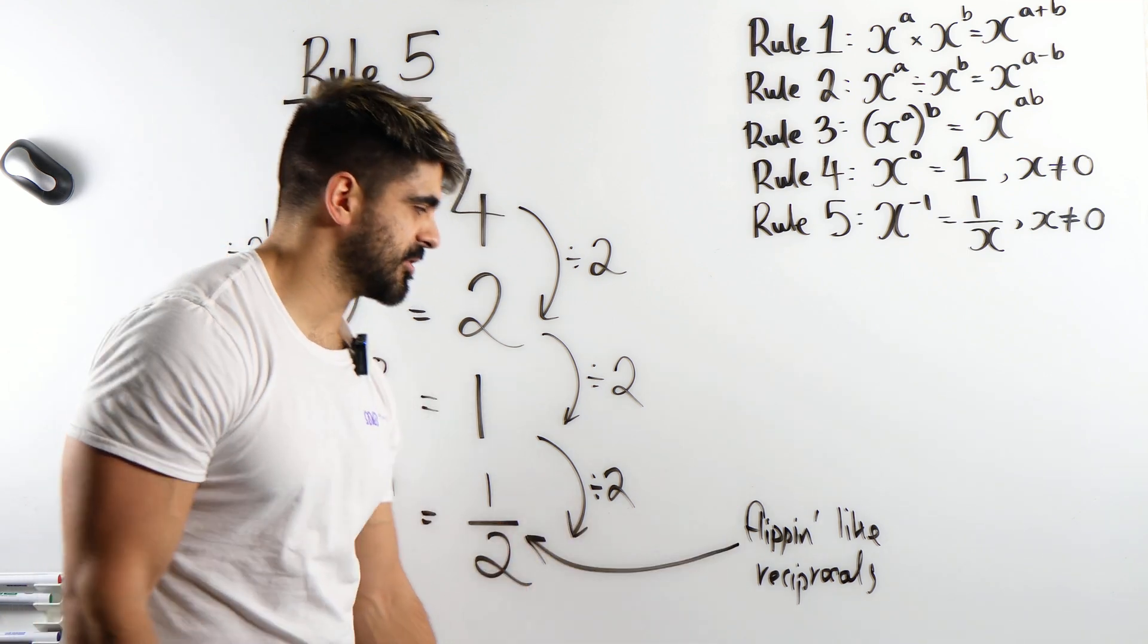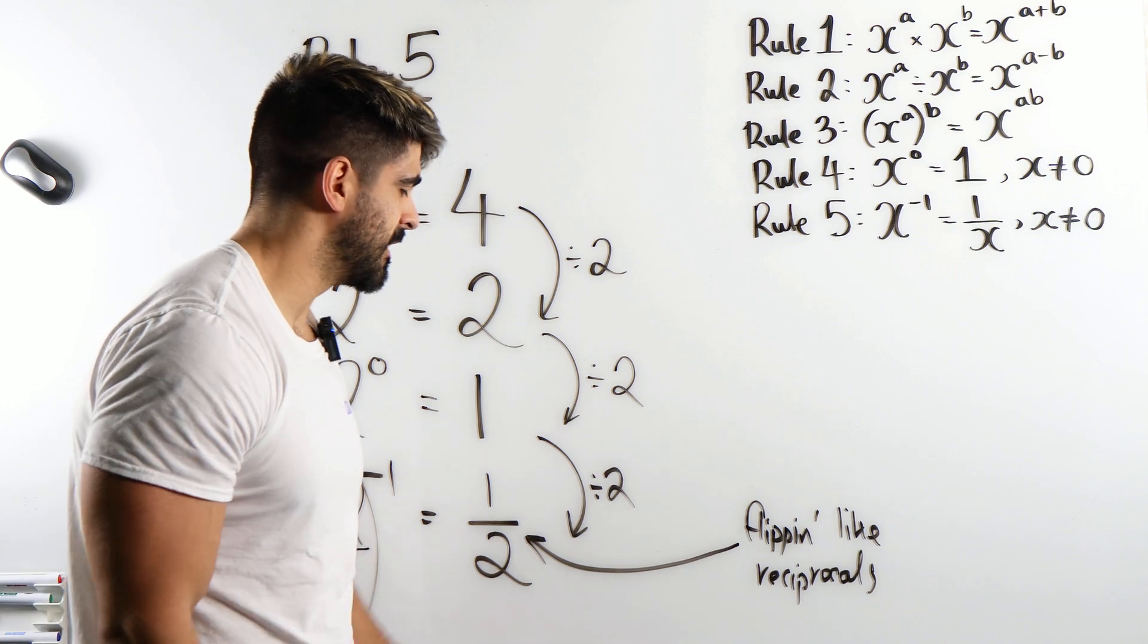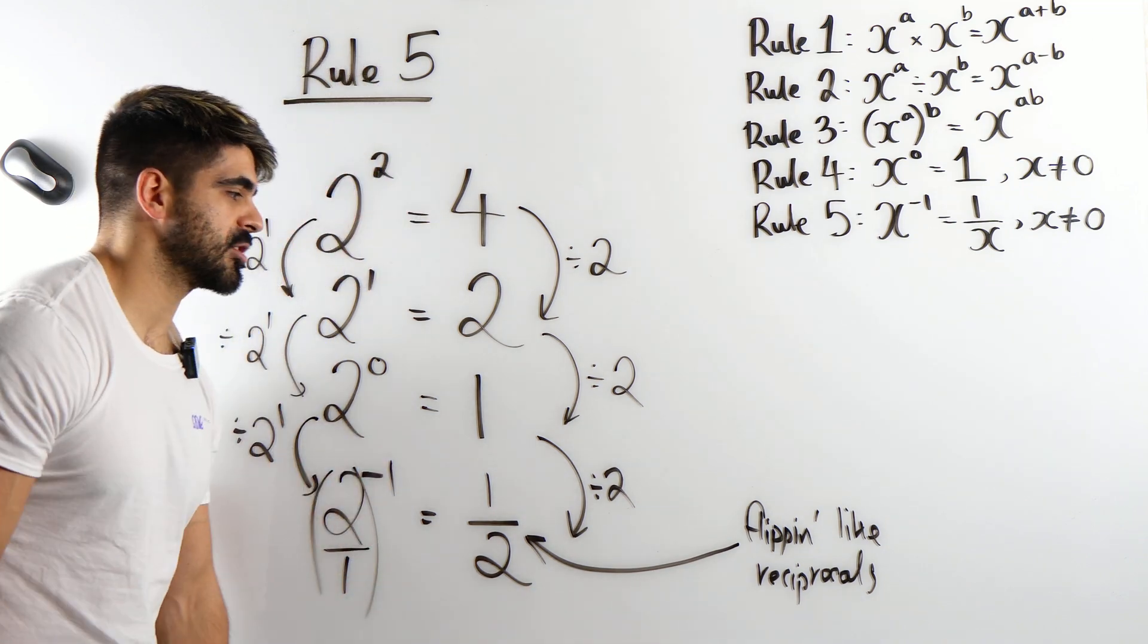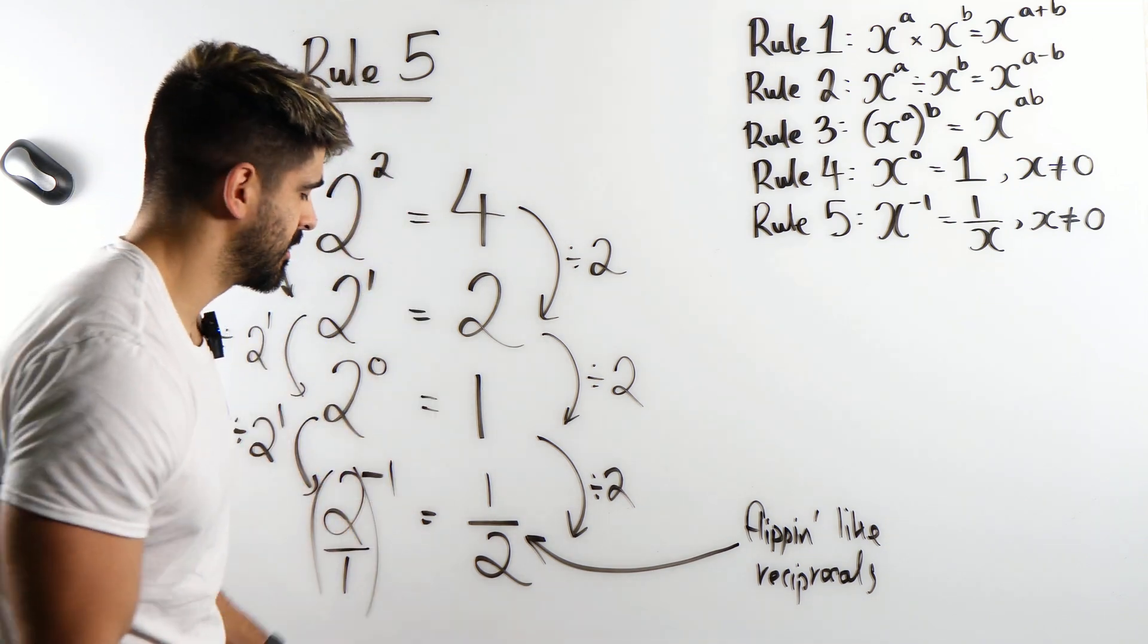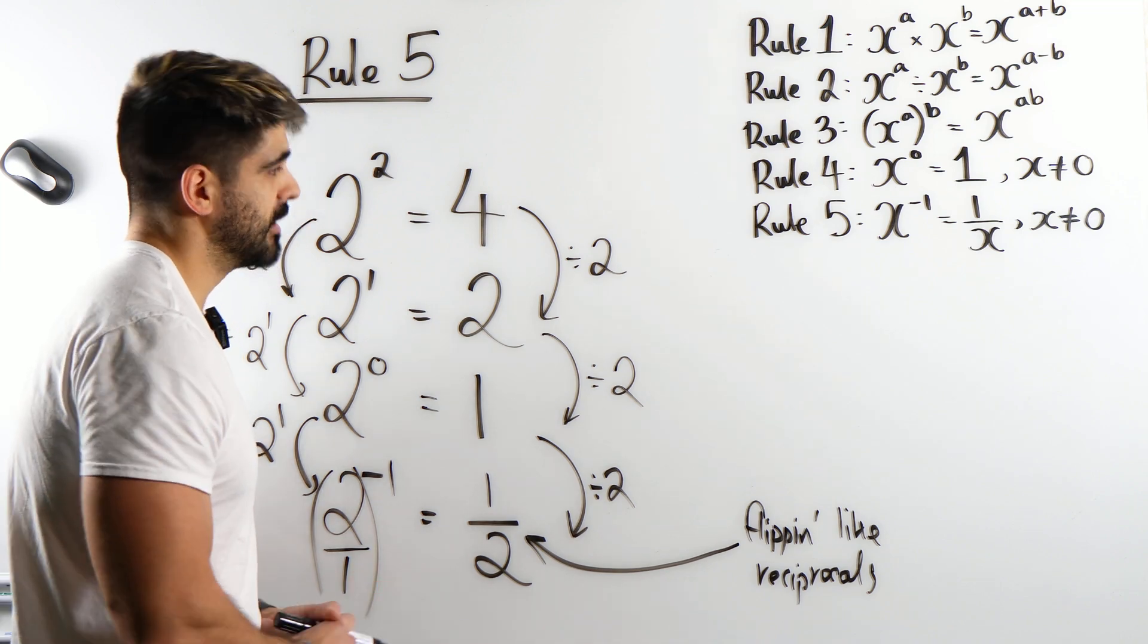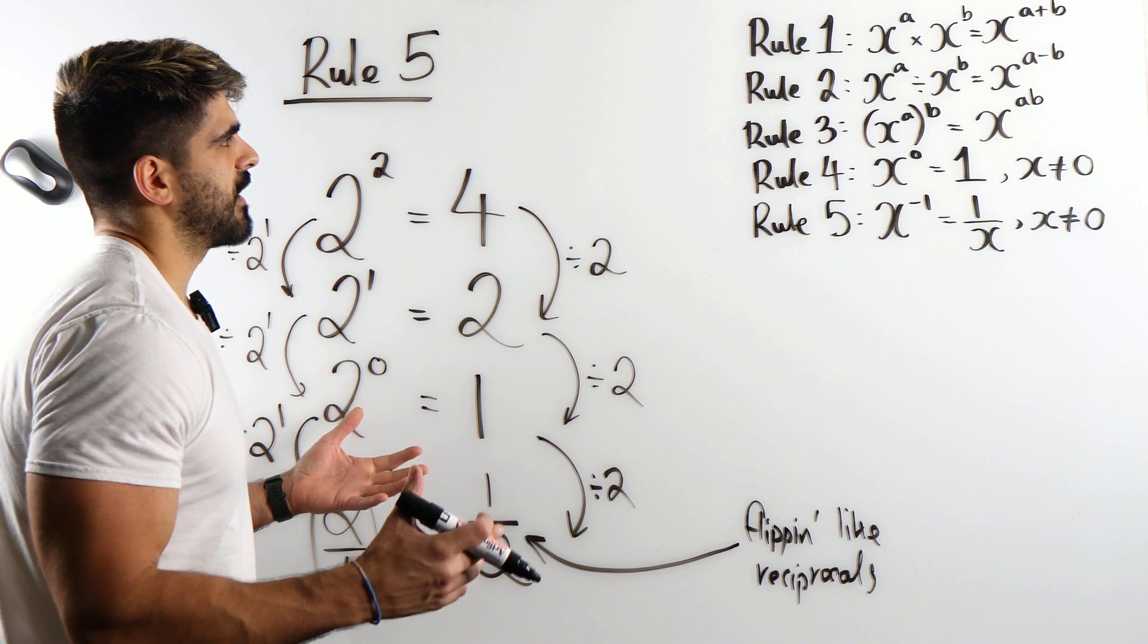I recommend you listen to the tune, it's an absolute banger. So whenever they see power minus 1, they're thinking flipping like reciprocals, a J. Cole tune. So yeah, these are the first five rules guys.